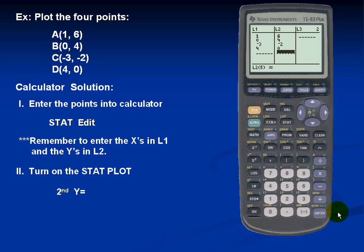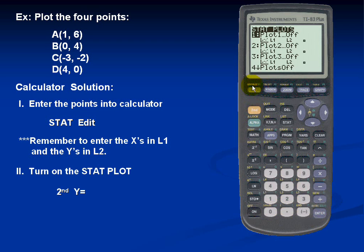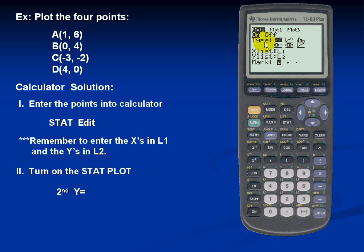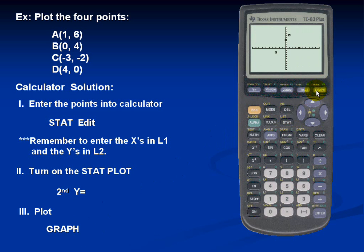Next, we'll turn on the STAT plot. So we'll hit 2nd and Y equals, which is the STAT plot. We'll choose the first STAT plot by pressing Enter and simply turn it on. We'll make sure the type is set to a dot plot, the X values are in List 1, the Y values are in List 2, and the symbol is the first symbol. To plot, we simply hit Graph. Once we hit Graph, we can see our four points.